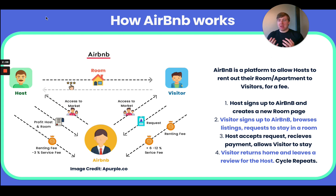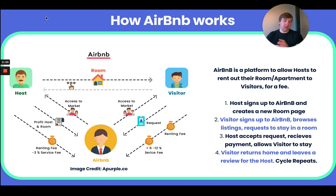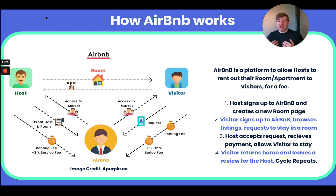Airbnb is a really popular platform. Typically the way it works is someone will come on, search for an apartment — maybe in London, Paris, Rome, New York, wherever it may be — and type in their requirements, for example two bedrooms, maybe with a hot tub. They'll get a bunch of results, eventually pick somewhere, and book.